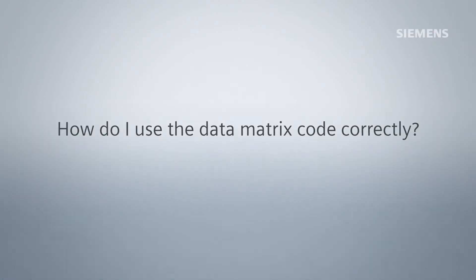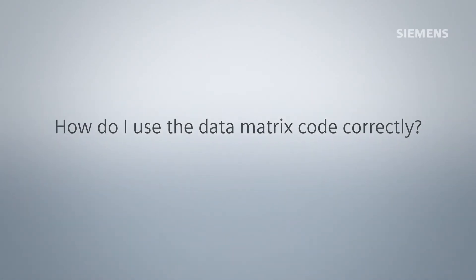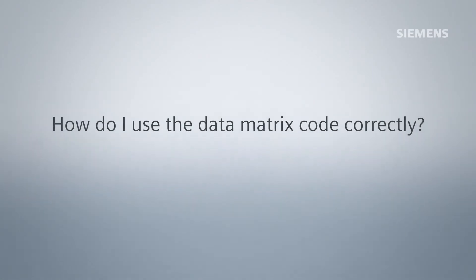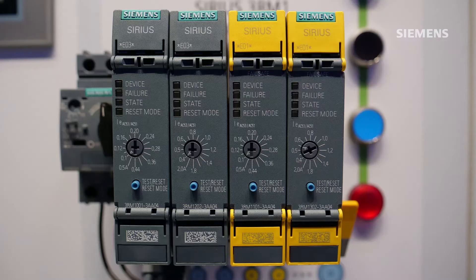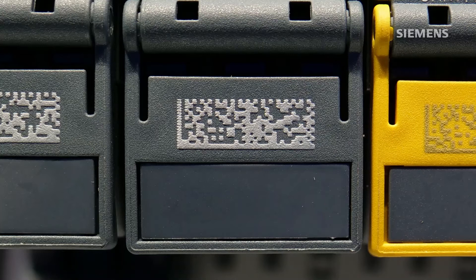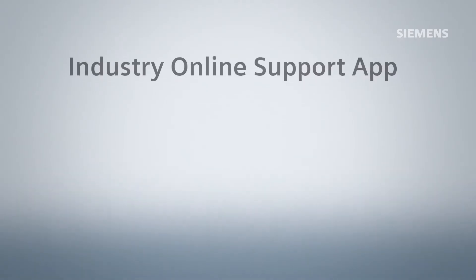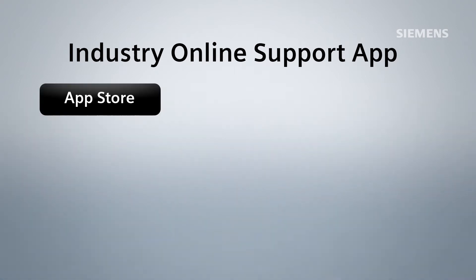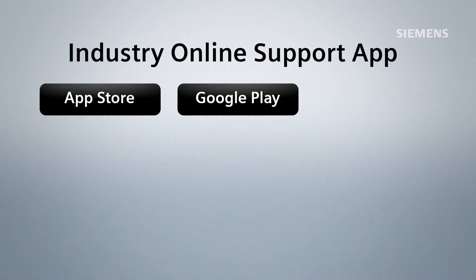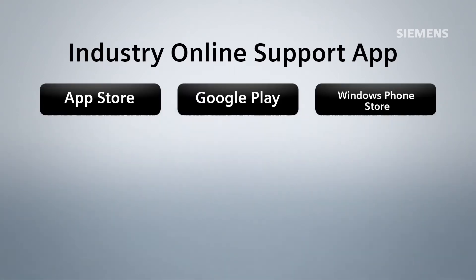How do I use the data matrix code correctly? The current Siemens products contain a data matrix code. To use it properly, you need the Industry Online Support app. This can be installed via the respective app store.